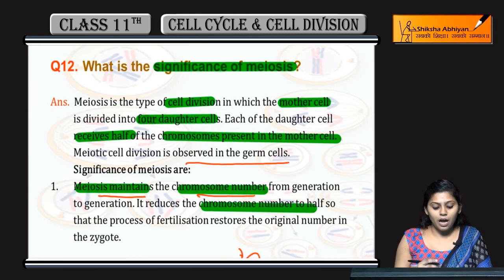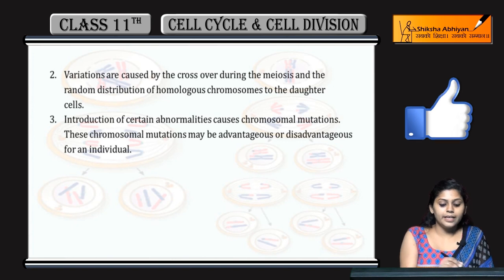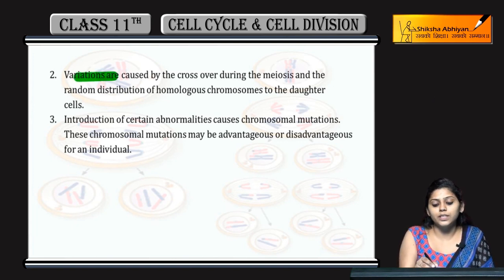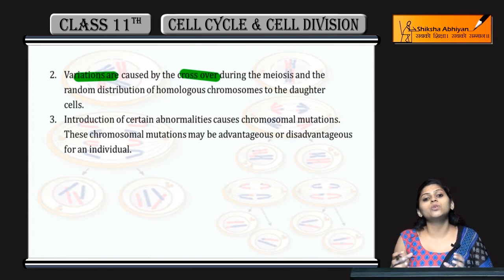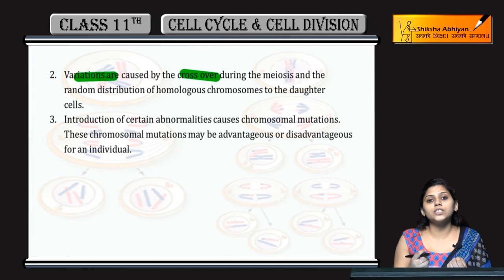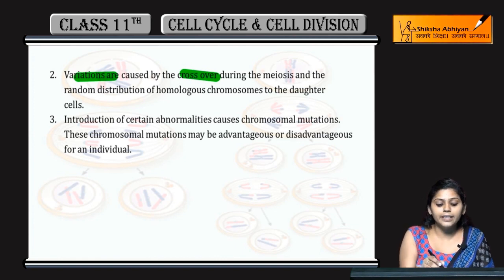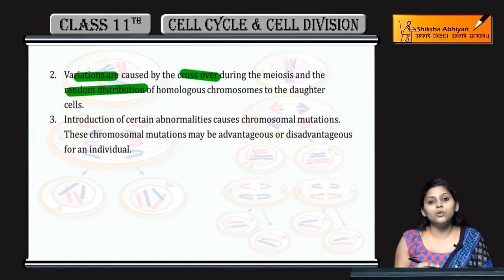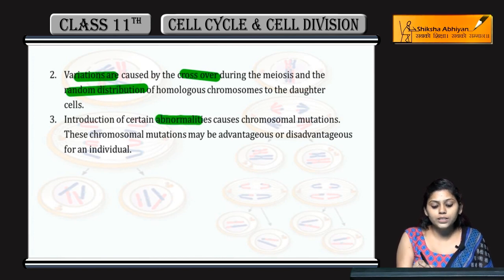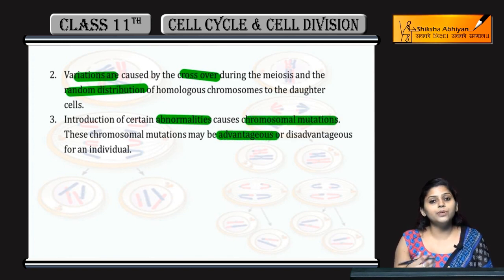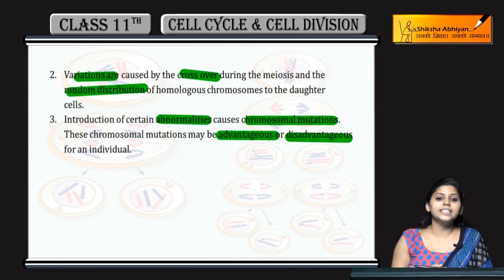During meiosis, crossing over occurs when homologous chromosomes cross over and exchange different features. This results in random distribution of chromosomes in the zygote, leading to variations. These variations or mutations can be advantageous — good for the human or species — or disadvantageous.